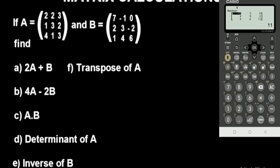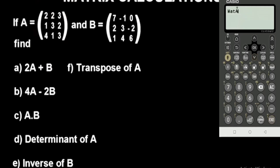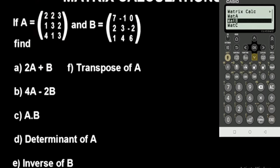For the next option, we have 4 Mat A minus 2 Mat B. Go to the catalog button, matrix option, select Mat A, multiply by 4, minus 2, then go to catalog, matrix option, select Mat B, and press execute. This gives you the subtraction result.